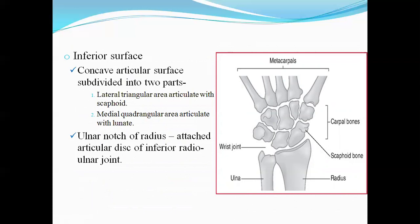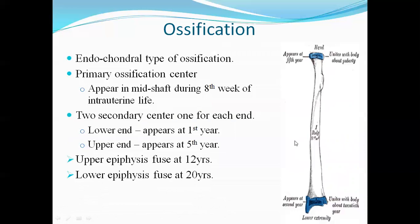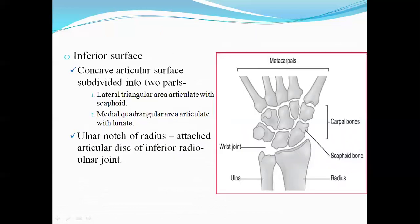The inferior surface from lateral to medial: the triangular lateral part articulates with the scaphoid bone, and the medial quadrangular part articulates with the lunate bone, forming the wrist joint.